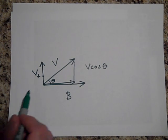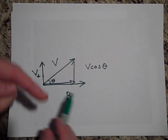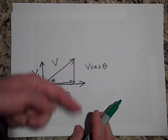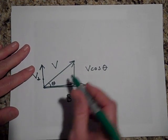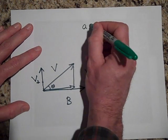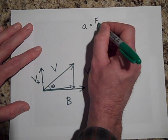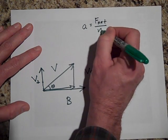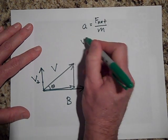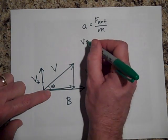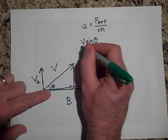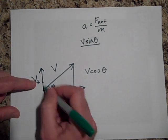If you want to know about the radius of the circle it's going to go in as it does that, the radius of the circle is going to be just apply a equals F_net over m and V squared. But this V squared is going to be V sine of theta. It's going to be V squared over R.